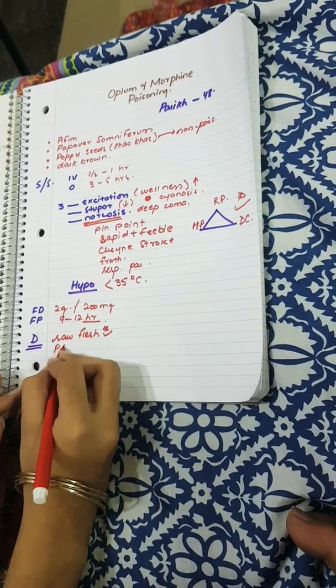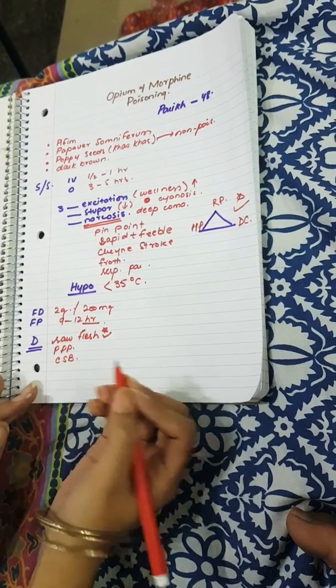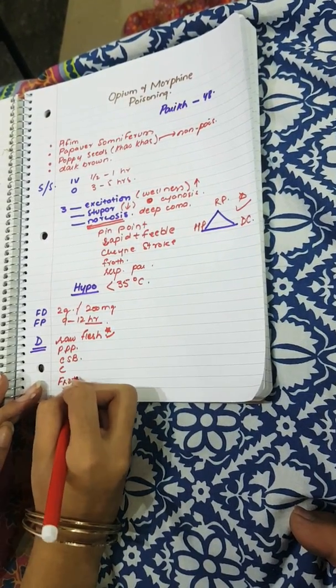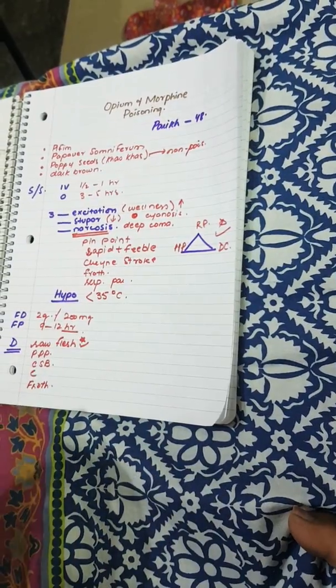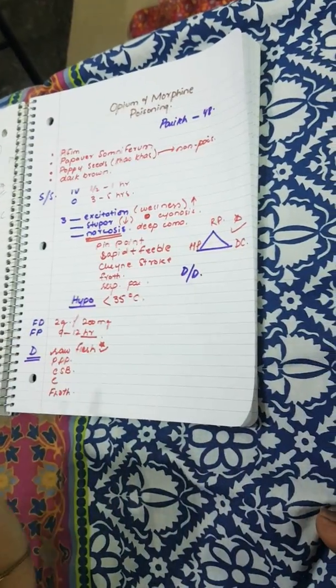Then there would be pinpoint pupils, there will be Cheyne-Stokes breathing, there would be coma, there would be froth that is not fine as in asphyxia and drowning. Then we need to know the differential diagnosis.